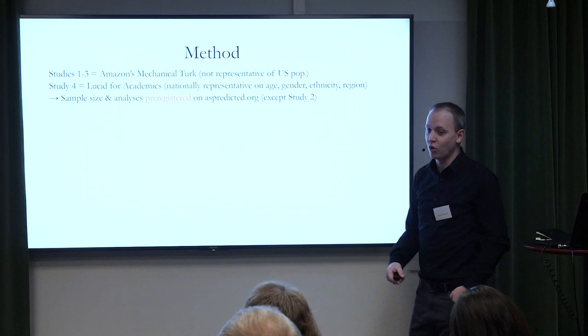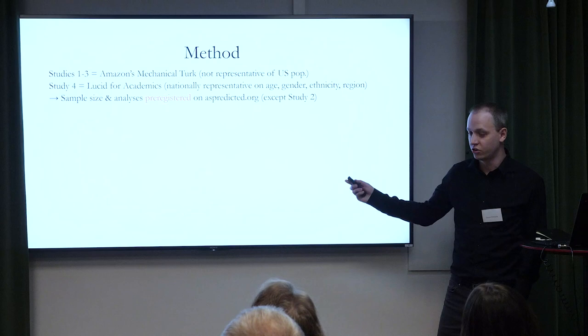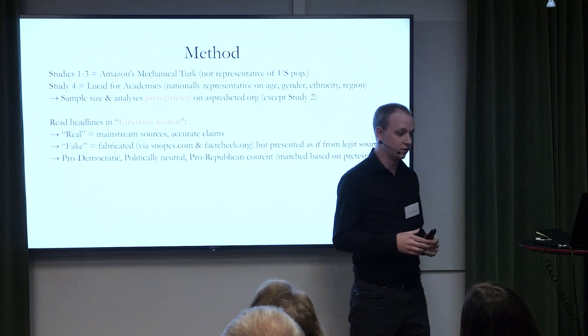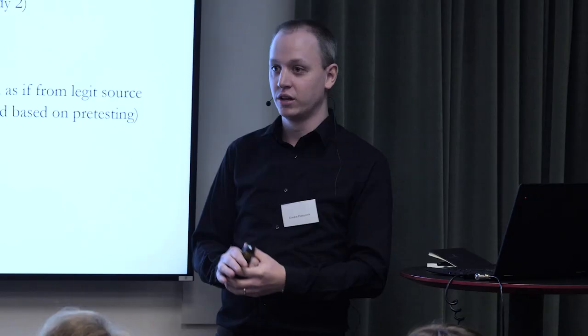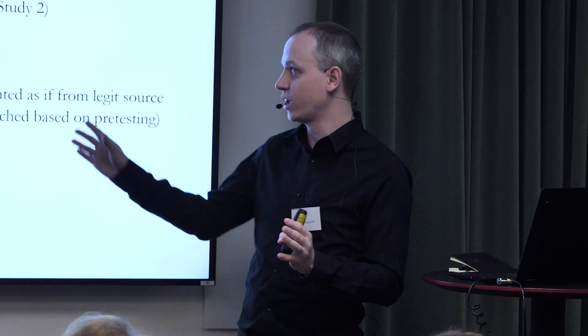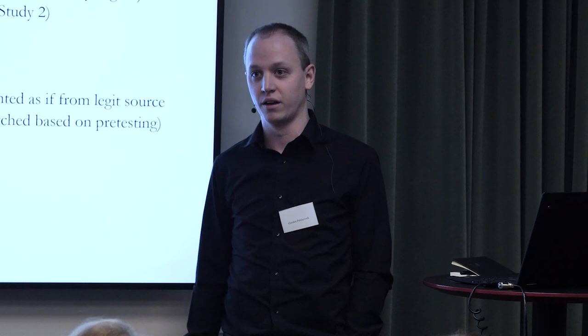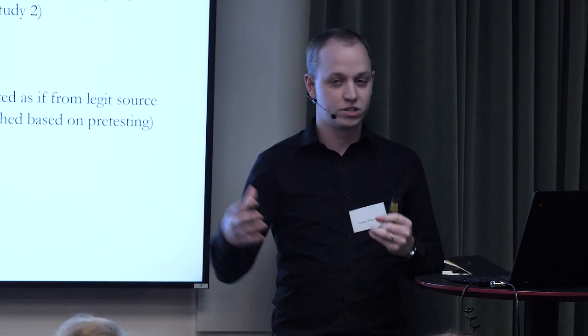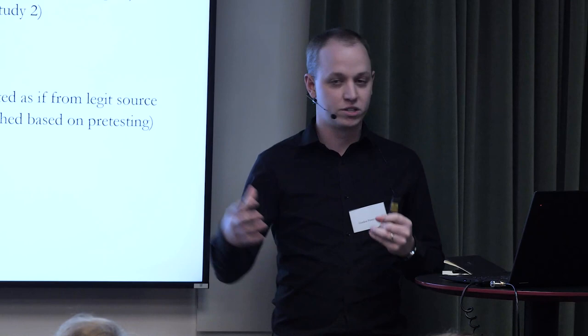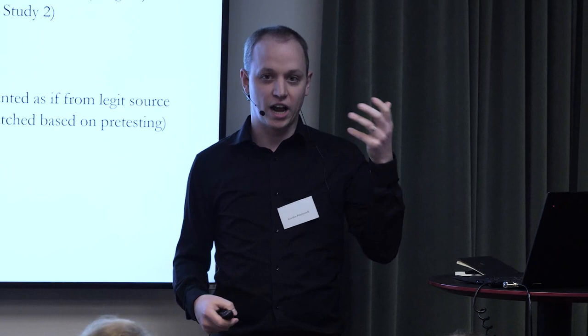We have way more than four studies on this — dozens now — and we always get the same effects. I'm showing four of the original ones. Every one of these studies has the same design: we take actual content from the American political context and present it to people. These are actual fake news stories that were fact-checked as fake based on Snopes and FactCheck.org. We have large pretests to select headlines matched so that pro-Democratic headlines are on average as pro-Democratic as pro-Republican headlines are pro-Republican.